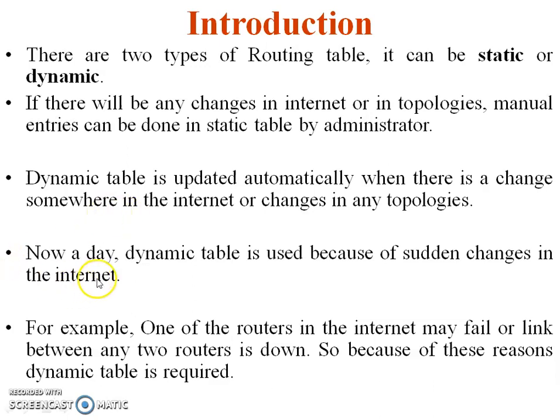Nowadays, the dynamic routing table is very popular and widely used because of sudden changes in the internet. For example, one of the routers in the internet may fail, or a link between any two routers goes down. Working routers will broadcast a message to other working routers inside the topology or internet to remove this failure router's updates.